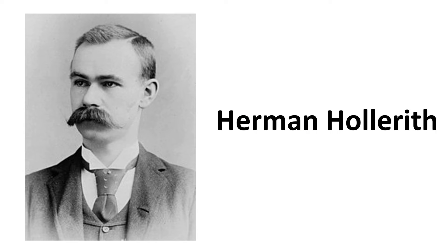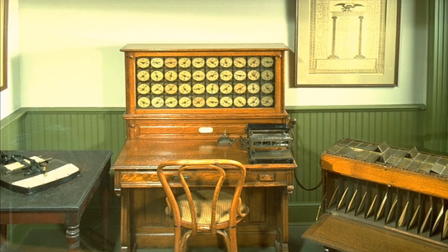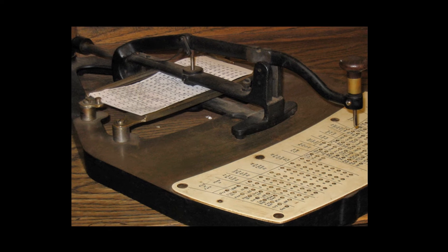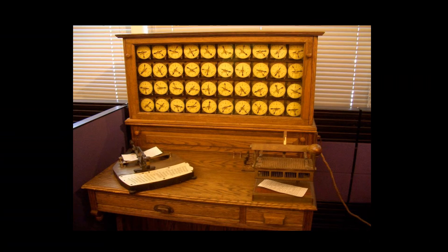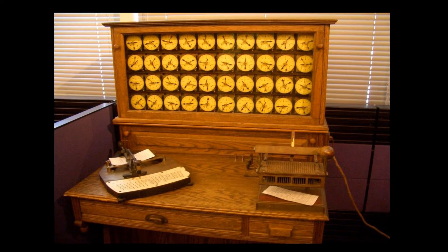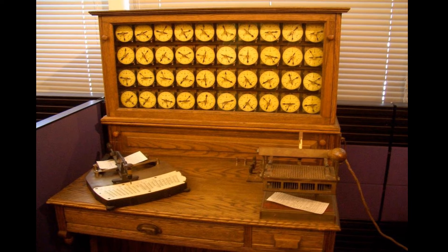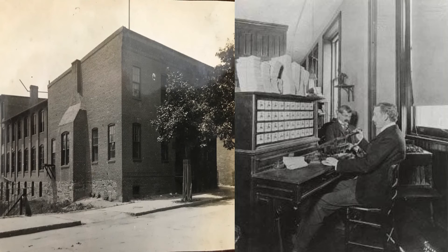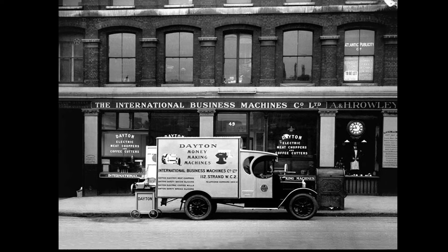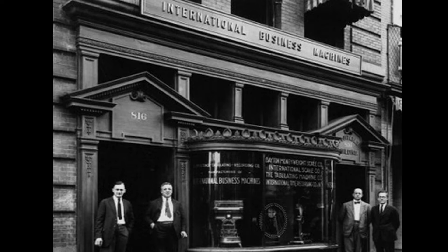In 1890, Herman Hollerith built a tabulating machine called Hollerith Desk. It consisted of a card reader which sensed the holes in the cards, a gear-driven mechanism which could count, and a large set of dial indicators to display the results. After building Hollerith Desk, Hollerith started a company by the name of Tabulating Machine Company. Eventually this company changed its name to International Business Machines, IBM.